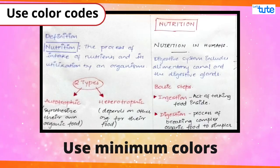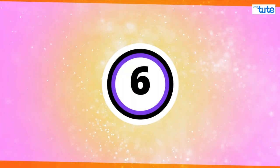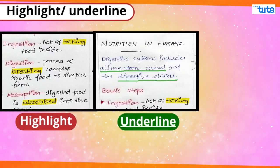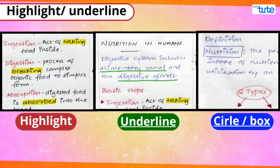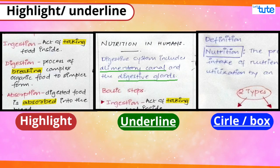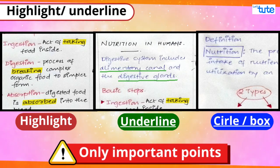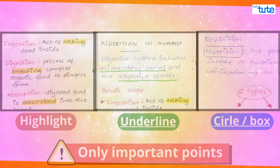Just use the minimum colors. You may highlight, underline, circle, or put a box to give extra emphasis for any points. I repeat, only the important points—otherwise there'll be only boxes and circles in our notes.